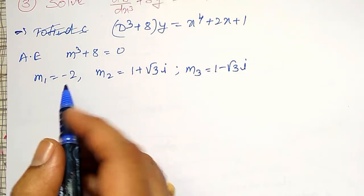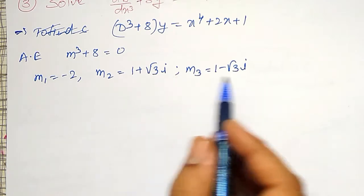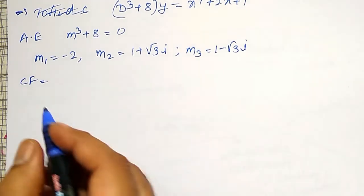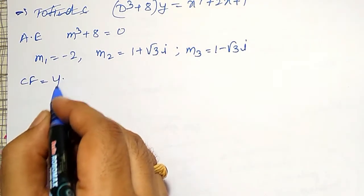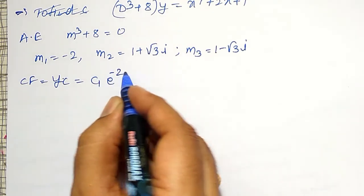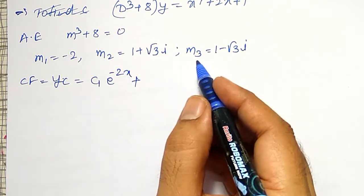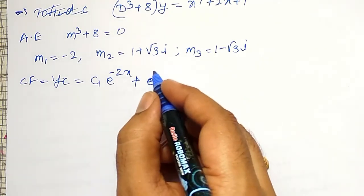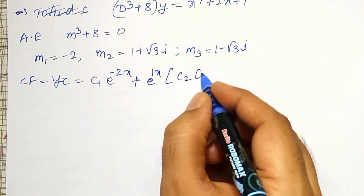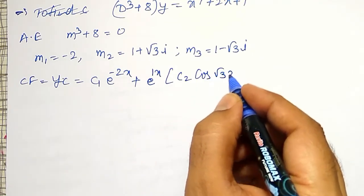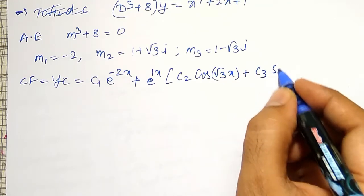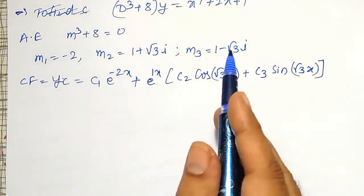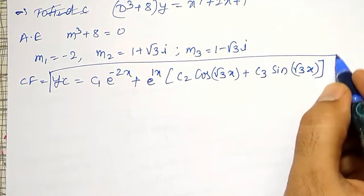The first root is a distinct real root and the other two roots are complex conjugates. Therefore the complementary function yc can be written as: c₁e^(−2x) plus, since the real part of the complex roots is 1, e^(x) times (c₂ cos(√3 x) + c₃ sin(√3 x)), where the imaginary part is √3.